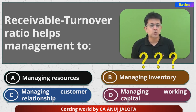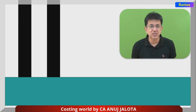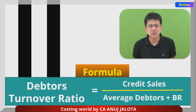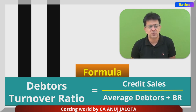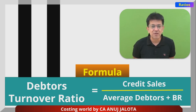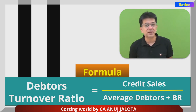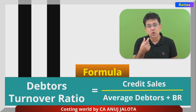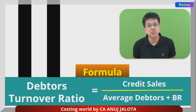Let's see what is debtors' turnover ratio. Debtors' turnover ratio is calculated as credit sales divided by average debtors. Debtors and bills receivable is almost the same thing, so therefore average debtors plus bills receivable. Obviously average comes because in the numerator you have a P&L account item, so in the denominator you cannot be taking debtors and BR on a certain date — that will not represent the numerator in a proper way.